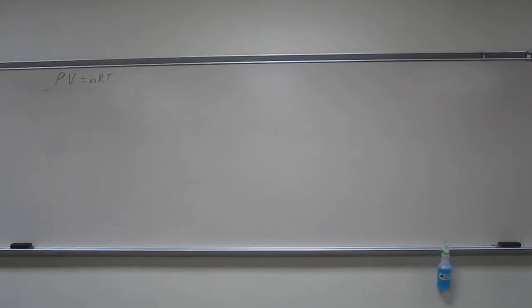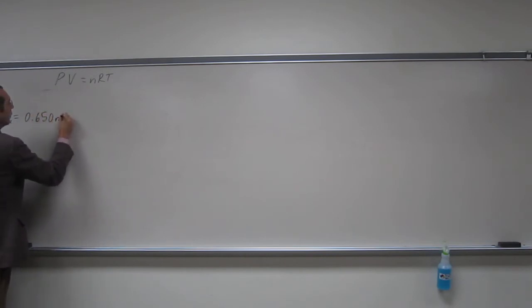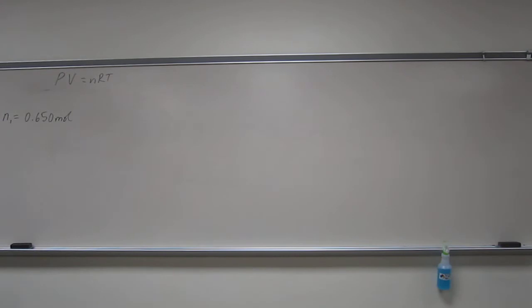So, it says that the original number of moles of gas is 0.650 moles. And it says the original pressure is 730 millimeters of mercury. And then it tells you that the final pressure is 1.15 atm.